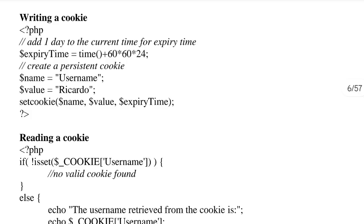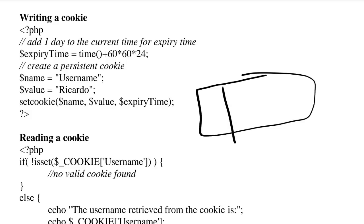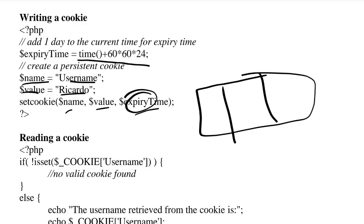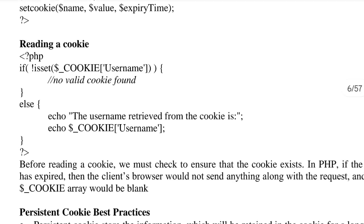To write a cookie, you specify three things: name, value, and expiry time. Name is the name of the user, value is the user's value, and expiry time is set as time plus 60*60*24, which counts 24 hours — one day. That's how you set a cookie.